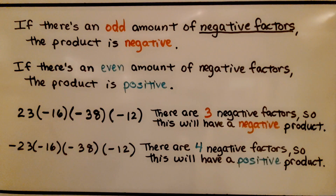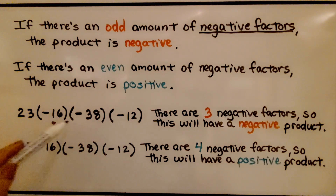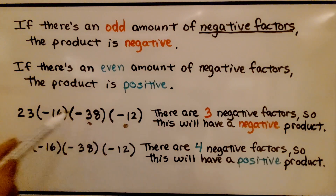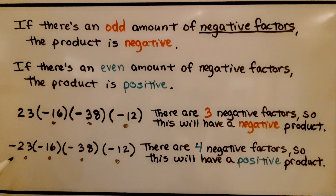If there's an odd amount of negative factors, the product is negative. If there's an even amount of negative factors, the product is positive. We don't even need to solve — we can count: one, two, three negative factors here. Three is odd, so the product will be negative. In the other expression we have one, two, three, four negative factors. Four is even, so this will have a positive product. We already know the sign before doing the math.